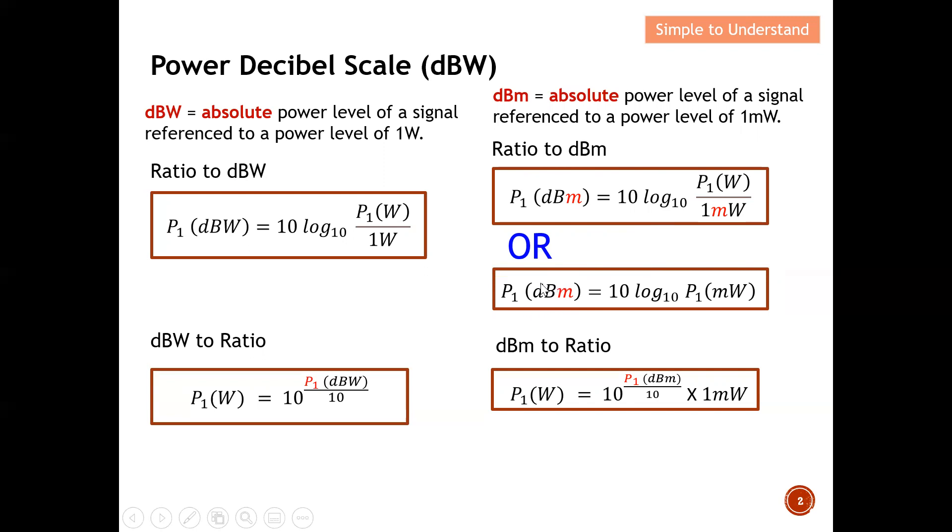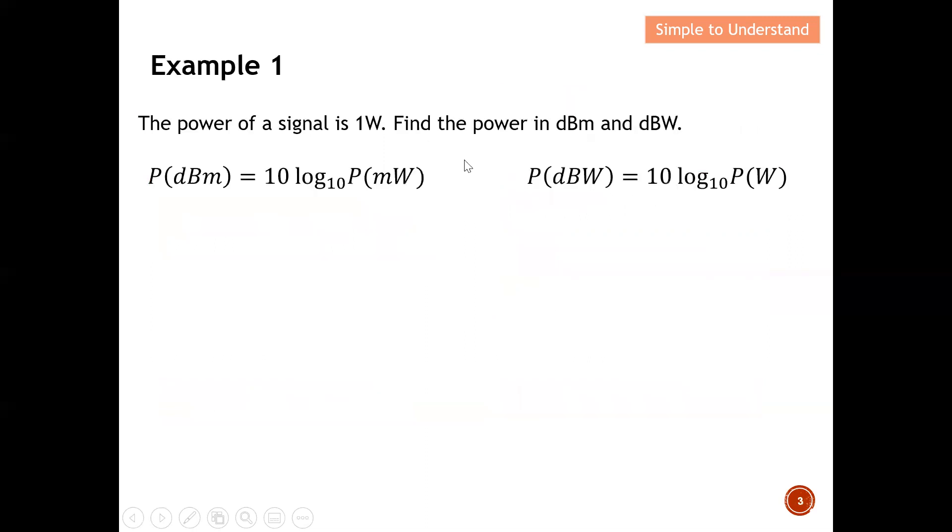Likewise, I have also proved on the previous video how to convert from dBW to ratio. So, this is the equation to use when you need to convert dBW to ratio. Whatever number that is given to you in dBW, you just plug it here. Okay, you punch the calculator, you will be able to obtain the power in terms of ratio. Same as dBm to ratio, they are exactly the same. Okay, except this 1 milliwatt. So, this 1 milliwatt is actually mainly for dBm.